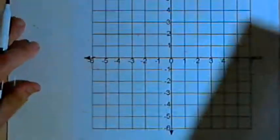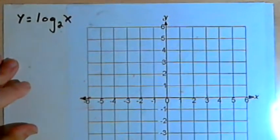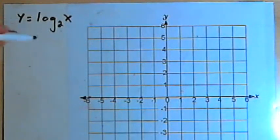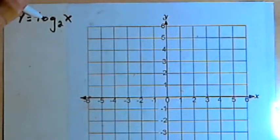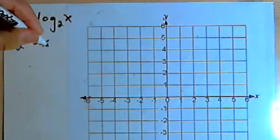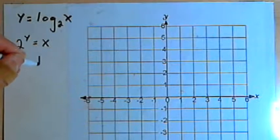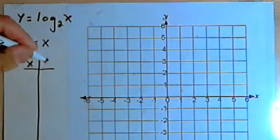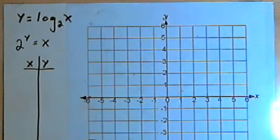Here's the first example: y equals the log base 2 of x. To graph this, the first step I'm going to use will be to convert this to its exponential form — that's going to be 2 raised to the y power equals x. To make it easier to graph, I'm going to make a table of values.